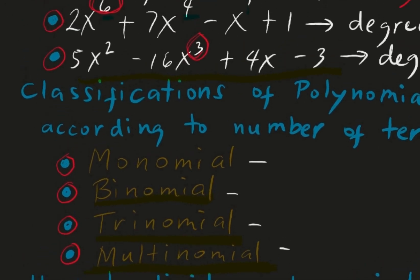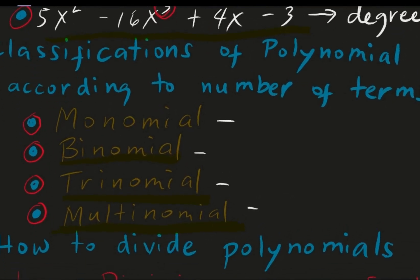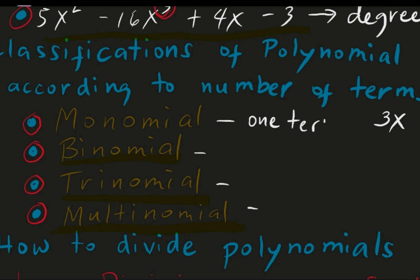Let's proceed to the different classifications of polynomials according to the number of terms. For example, if you have 3x, there is only one term because there is no plus or minus sign. When there is only one term, you call that a monomial.